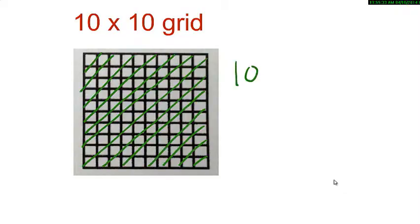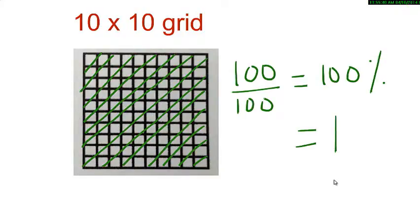If the entire 10 by 10 grid is shaded, it represents 100 out of 100, which is 100%, which is also equal to 1.